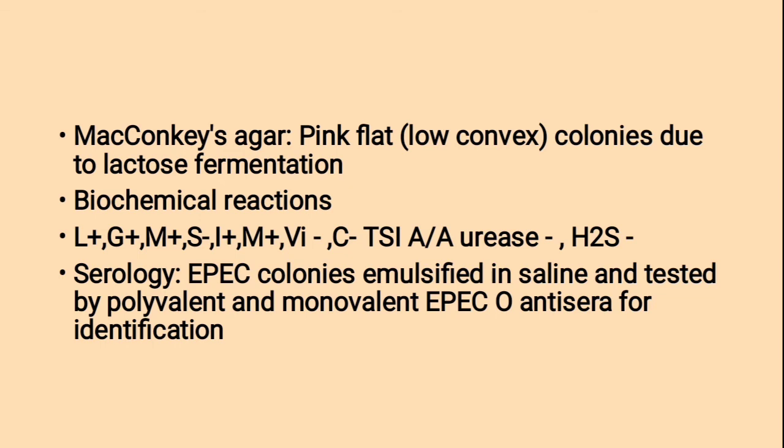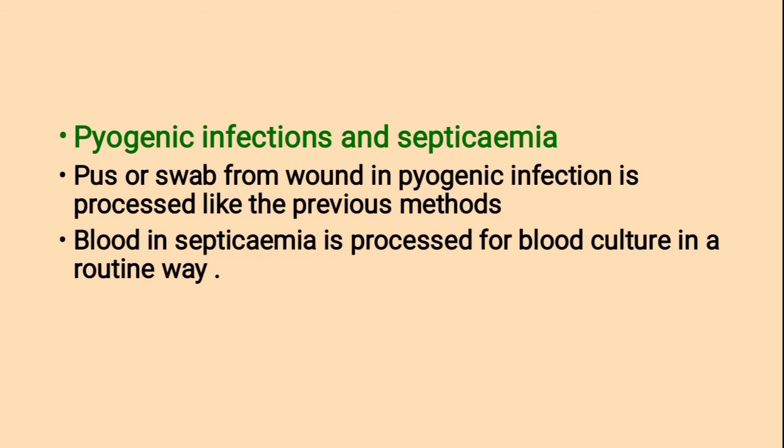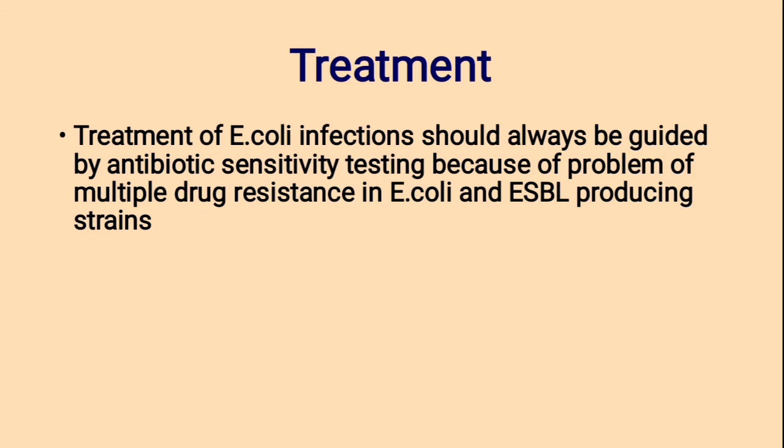Pyogenic infections and septicemia: pus or swab from wound in pyogenic infection is processed like the previous methods. Blood in septicemia is processed for blood culture in a routine way. Treatment: the treatment of E. coli infection should always be guided by antibiotic sensitivity testing because of the problem of multiple drug resistance in E. coli and ESBL-producing strains. Drugs are selected using the Kirby-Bauer antibiotic sensitivity testing method, as previously discussed.